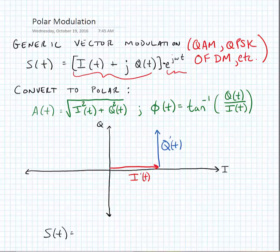We can have a vector represented as the sum of I(t) and Q(t). Here we can see that we can represent that Cartesian vector in I(t) and Q(t) as A(t) with an angle of φ(t).